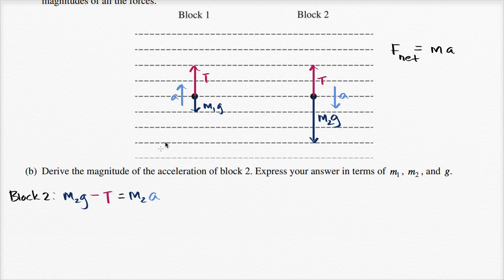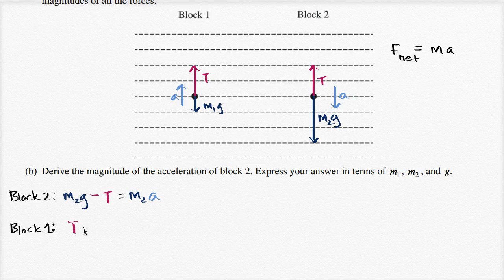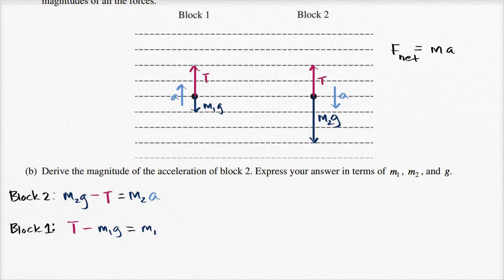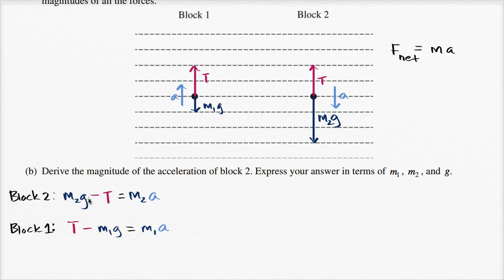What we can do to get rid of T is set up a similar equation for block one. For block one, since the acceleration is going in the upward direction, we take upward as positive. We know the tension is larger than the weight, so: T minus m1·g equals m1·a. The magnitudes of acceleration are the same since they're connected by the string, and the magnitudes of tension are the same. Now we have two equations with two unknowns, and if we eliminate the tension we can solve for acceleration.